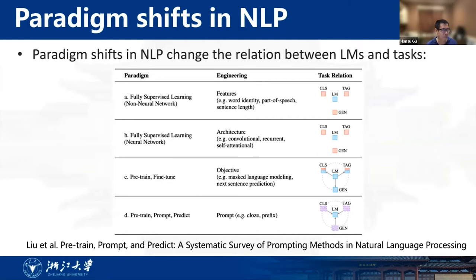Then in the past few years, the pre-train and fine-tune paradigm appeared, together with huge transformer-based language models like BERT and GPT. More recently, an emerging methodology called prompt tuning has appeared on the horizon, which can equip language models with few-shot capabilities.